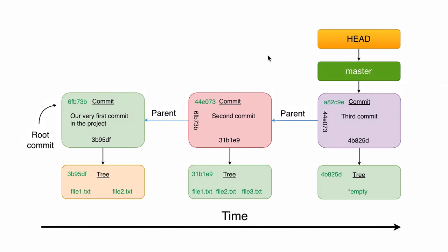At the moment the history of changes in our project is just a straight line — three commits in a row — and we can just move the HEAD pointer between those three commits. Now it's time to explain why we need branches, how we can use them, and of course we will try to create a new branch in practice. Let's start talking about that in the next lecture. See you there!